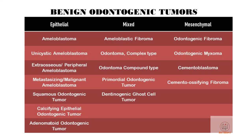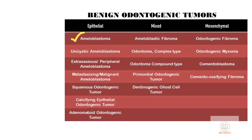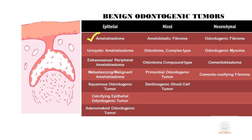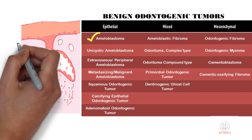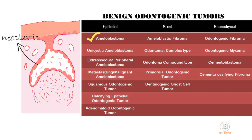Ameloblastoma is classified under the epithelial group in the classification of odontogenic tumors, which means that the epithelial component is neoplastic, whereas the connective tissue is only a supportive component.